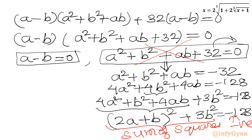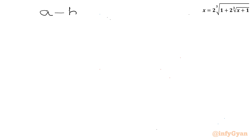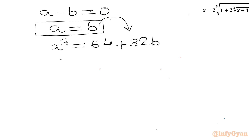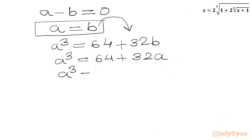So we will accept only a minus b equal to 0, meaning a equal to b. Now I will write our equation a cubed equal to 64 plus 32b. This was our substitution equation. Applying b equal to a here: a cubed equal to 64 plus 32a, or a cubed minus 32a minus 64 equal to 0.